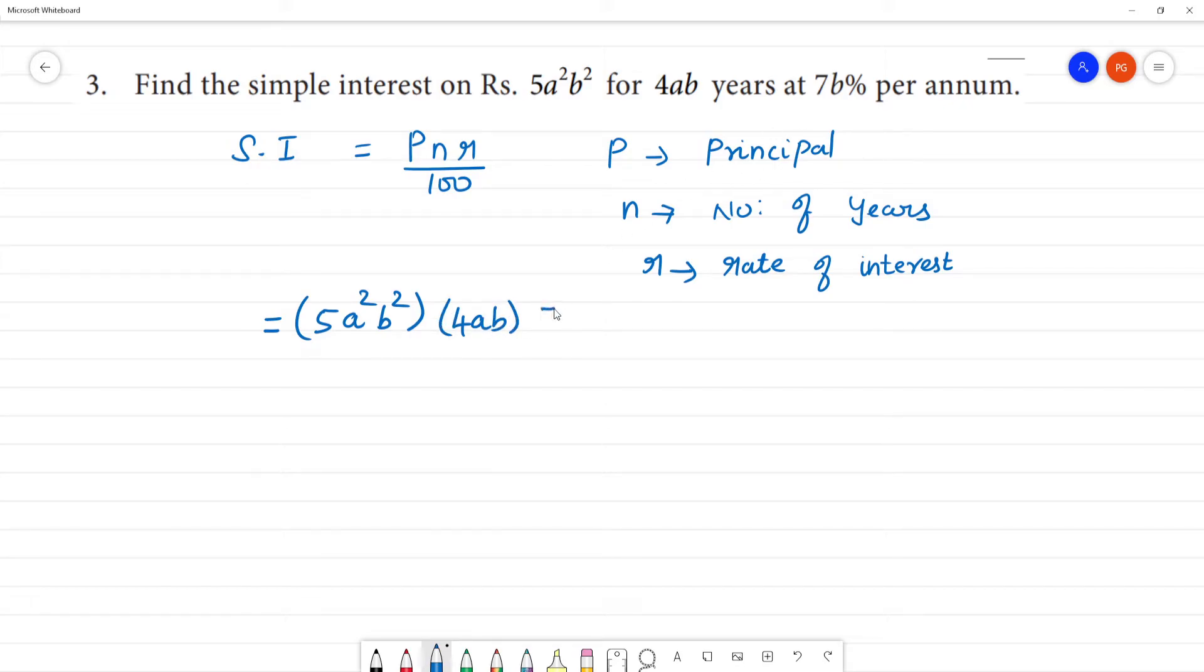R is 7b, so that is divided by 100 for the percentage.